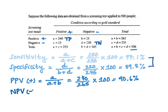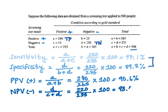The negative predictive value is the proportion of people who tested negative that do not have the outcome. The formula is D divided by C plus D — again looking at the rows. This equals 220 divided by 235, multiplied by 100, to yield a 93.6 percent negative predictive value. We can also calculate prevalence here.